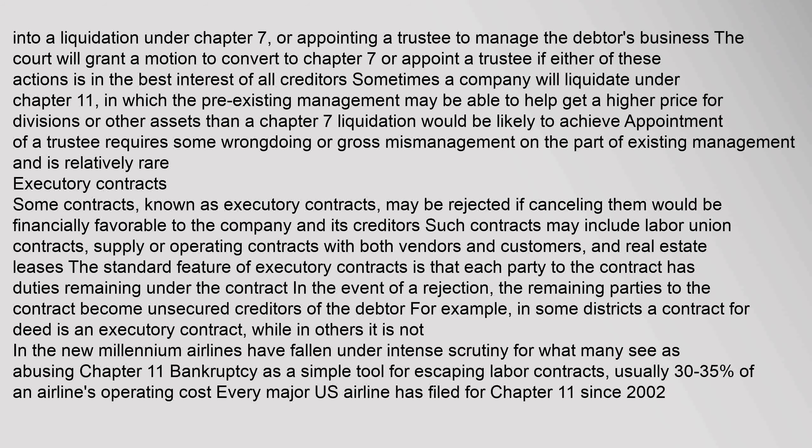The United States trustee can request the court convert the case into a liquidation under Chapter 7, or appoint a trustee to manage the debtor's business. The court will grant a motion to convert to Chapter 7 or appoint a trustee if either of these actions is in the best interest of all creditors. Sometimes a company will liquidate under Chapter 11, in which the pre-existing management may be able to help get a higher price for divisions or other assets than a Chapter 7 liquidation would achieve.